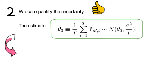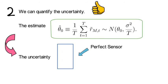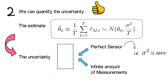Now, that tells us that the uncertainty is sigma square divided by t. So the uncertainty only vanishes if either our measurements come from a perfect sensor, which means sigma square is zero, or if we have an infinite amount of measurements, meaning t is infinity.